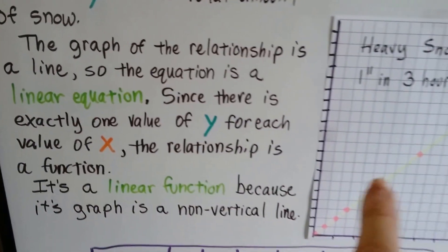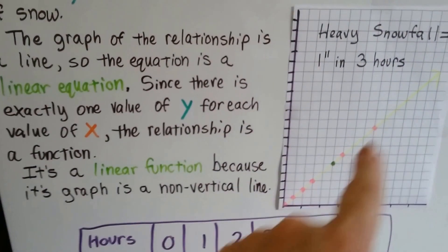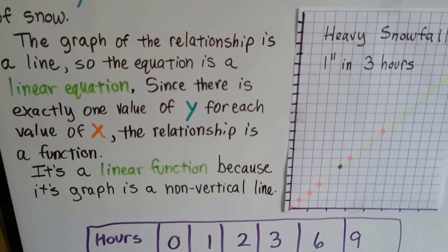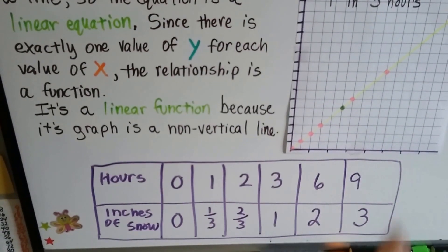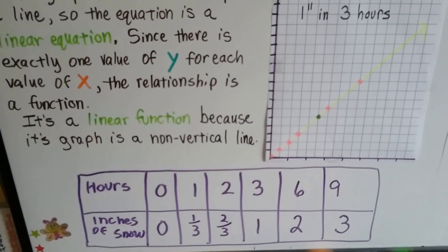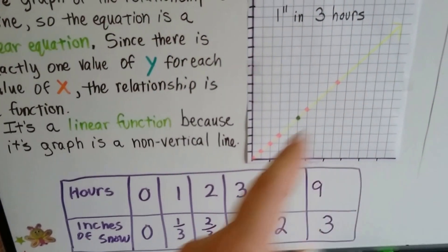The graph of the relationship is a line, so the equation is a linear equation. Since there is exactly one value of y for each value of x, the relationship is a function. And it's a linear function because the graph is a non-vertical line.